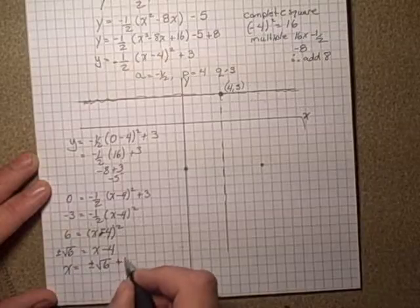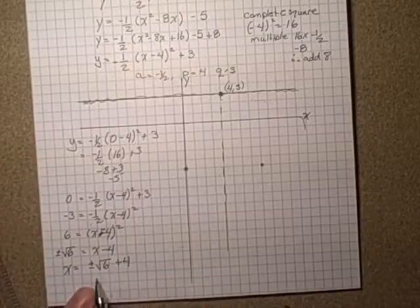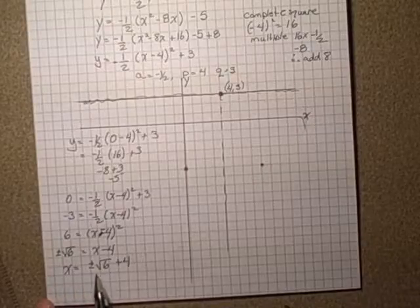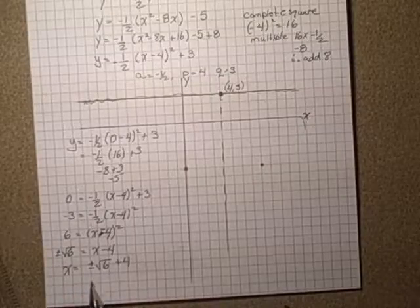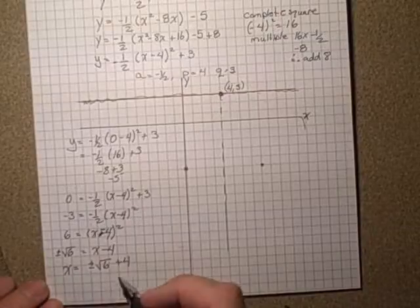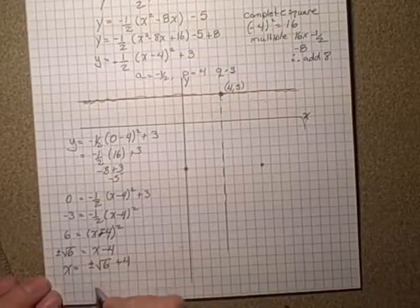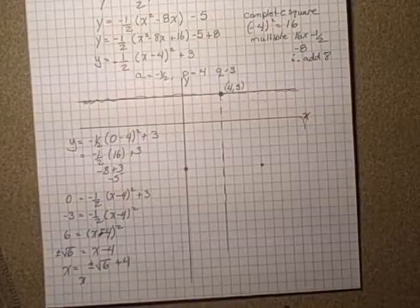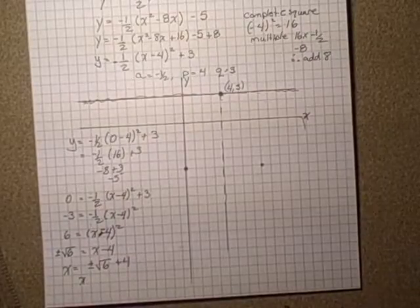And then finally add four to both sides, so our x-intercept, we have two of them, plus or minus the root of six plus four, adding four to both sides. So if we change this into a decimal number, so it's a little bit easier for us to graph, this turns out, root six if you put it into the calculator is about 2.45 or about 2.5.